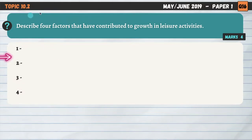Question number one is on topic 10.2. As always, you can head down to the description of this video and find links to the short summary videos containing literally everything you need to know on Chapter 10. So if you don't understand a question, go and watch the relevant video, then come back and attempt it. Describe four factors that have contributed to the growth in leisure activities.